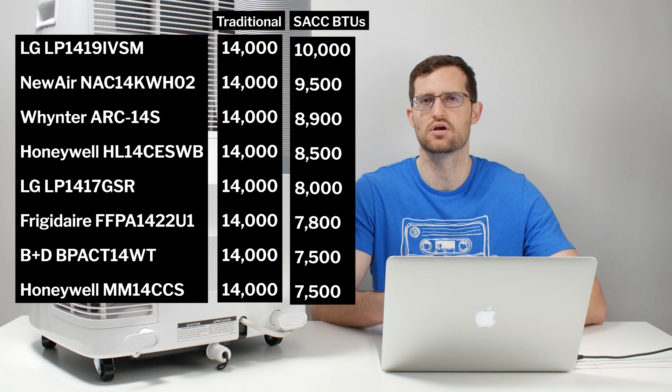Now certain units do still pull in some air from the indoors to cool the condenser even though most of the air that is used to cool the condenser is coming from the outdoors. There's still a little bit of air used from the conditioned room so infiltration air is not completely eliminated but it definitely is less of a problem with dual hose units, at least theoretically it would appear to be so.